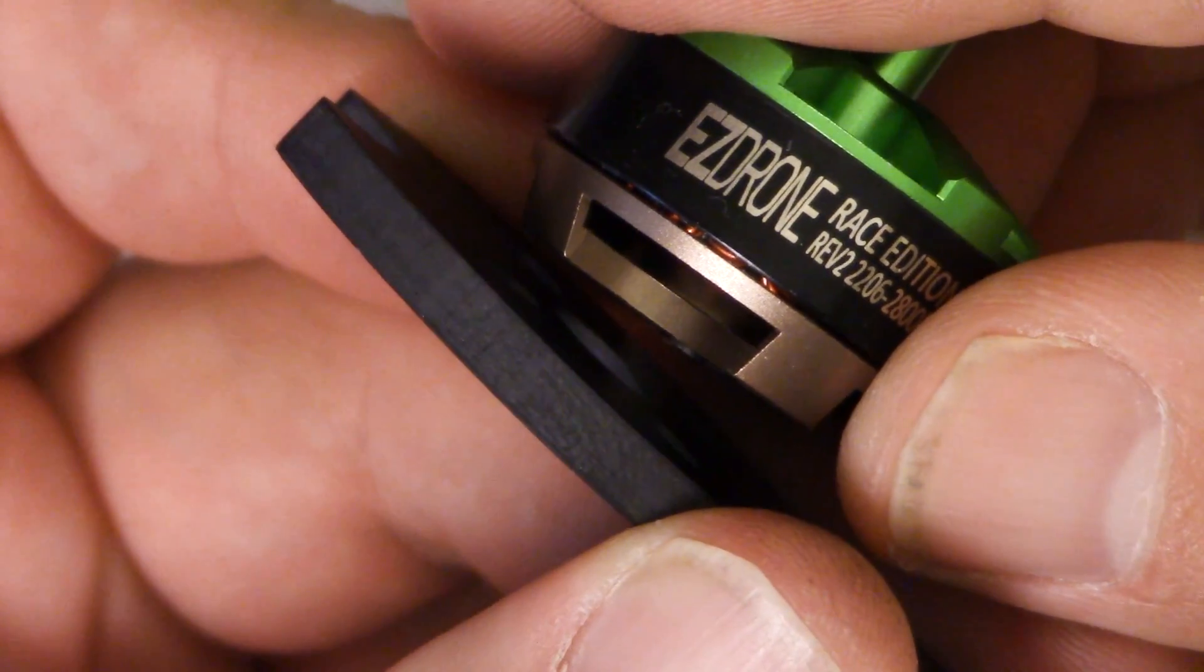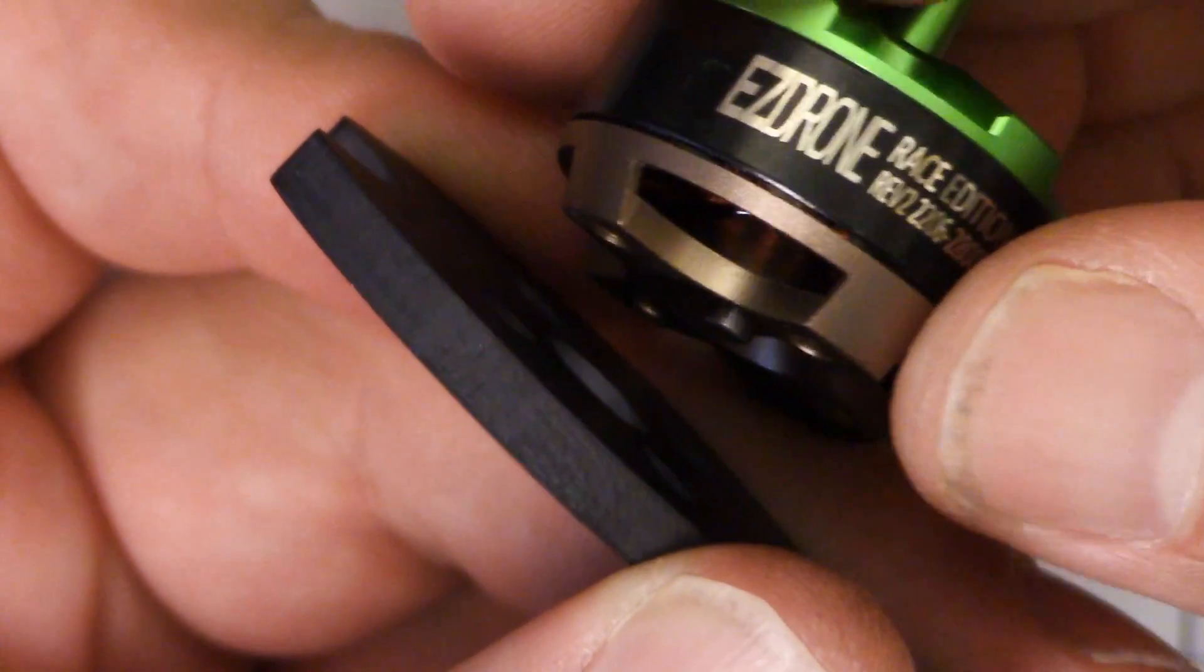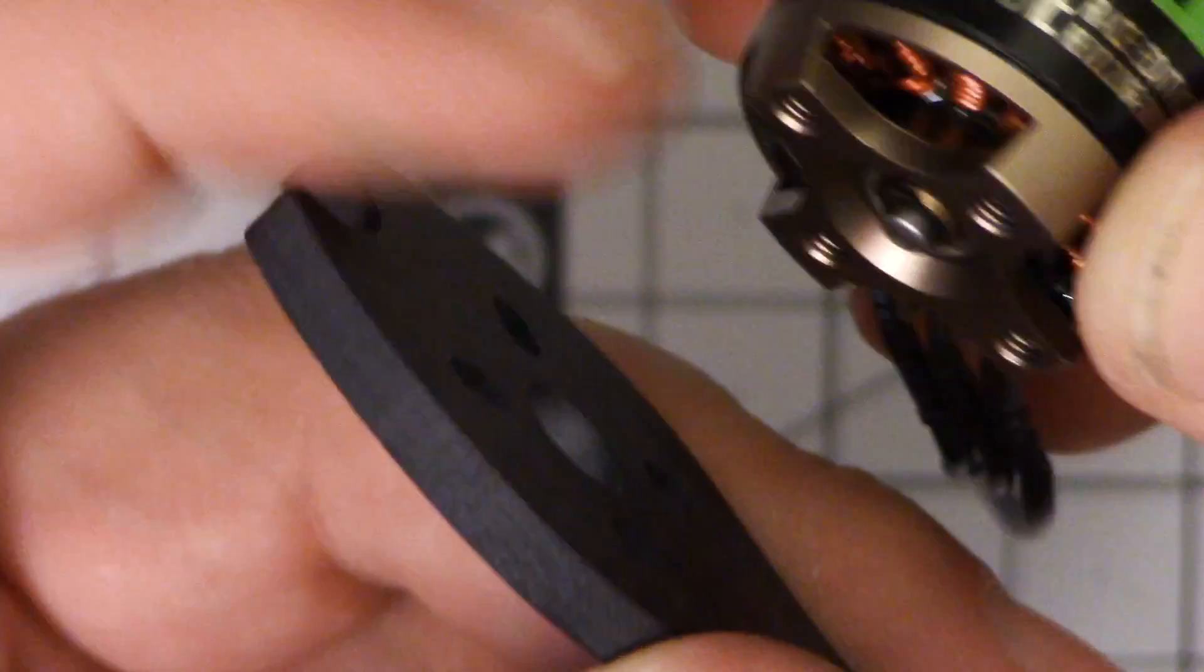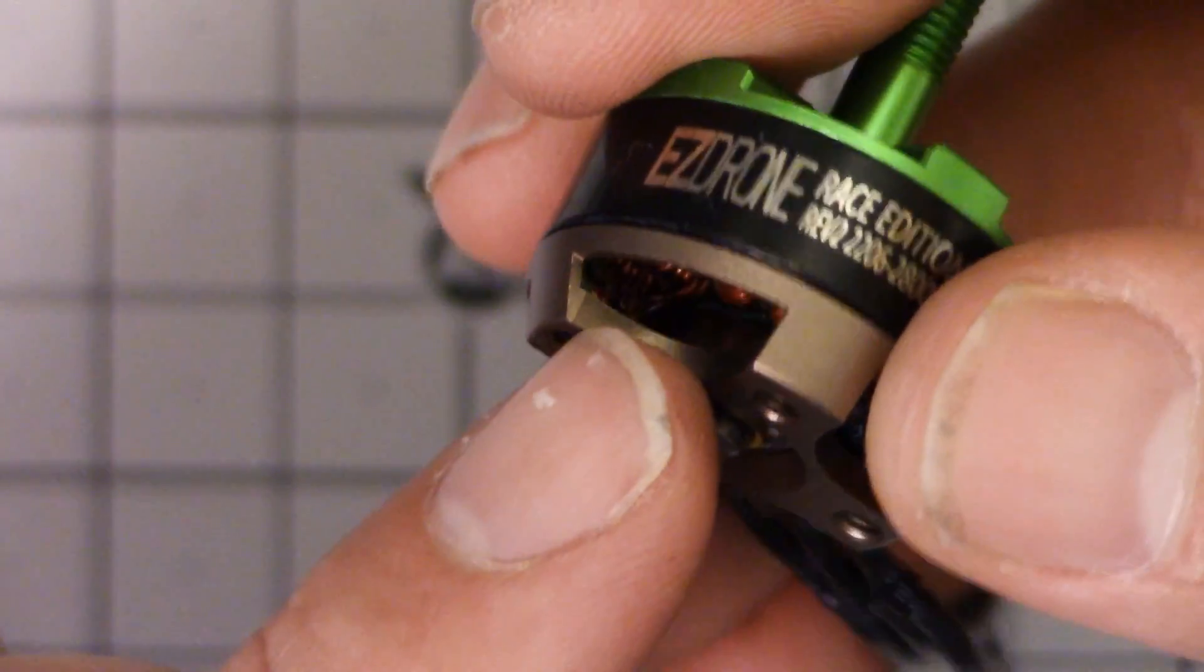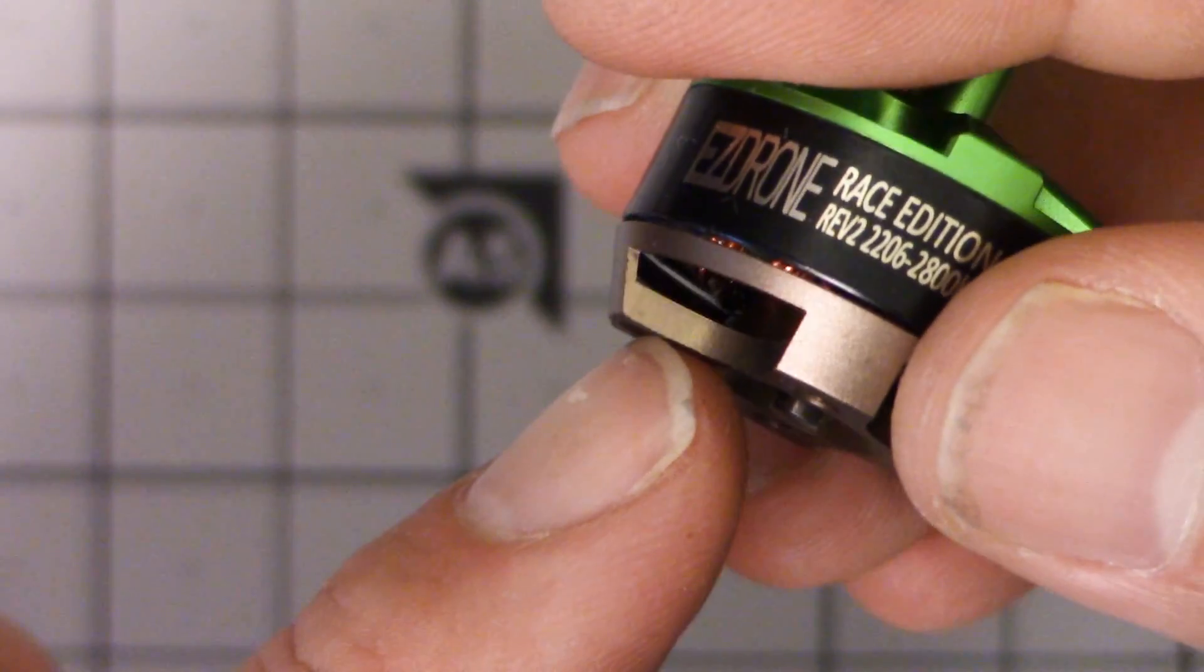Think about the fact that the motor base itself is only so thick. So after you're more than a millimeter or so in you're not going to be grabbing any more threads anyway. Any excess length is just something to get in the way. You don't want the screws to go through so far that they touch the motor windings and damage them and short them.